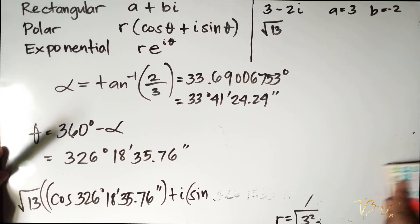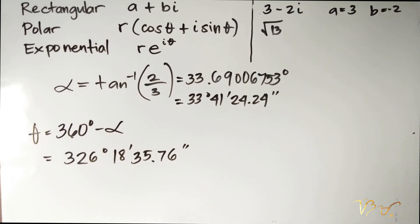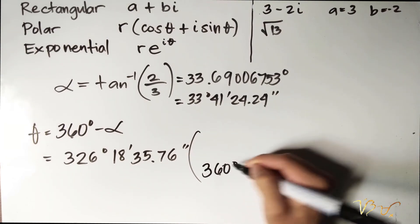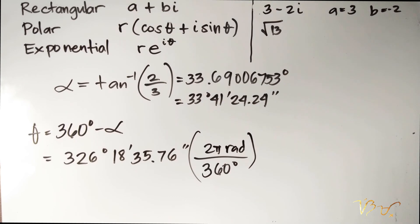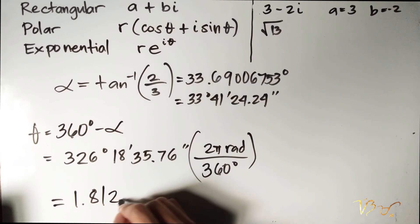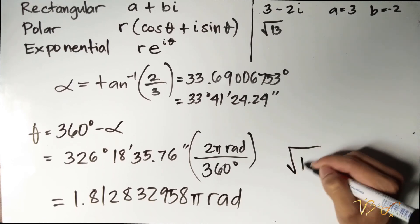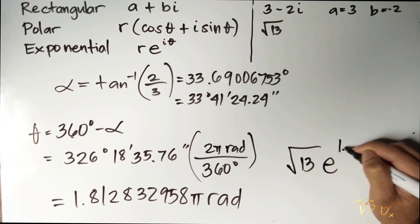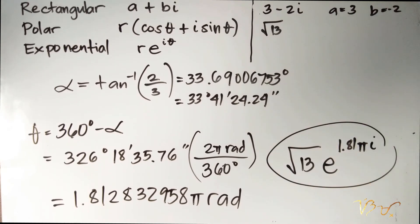For the exponential form of our complex number, we have the same value for r: square root of 13. But we convert the angle theta into its corresponding radian form. Dividing 326 degrees 18 minutes 35.76 seconds by 360 degrees and multiplying by 2 pi radians gives approximately 1.81 pi radians. So the exponential form is square root of 13 times e raised to 1.81 pi times i.